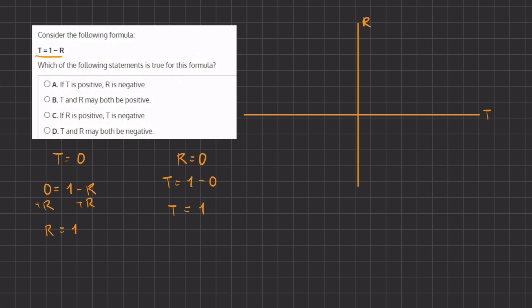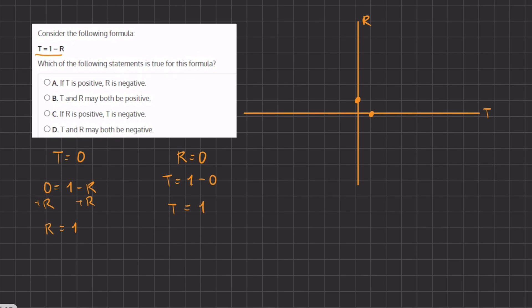Our first point is going to be when t equals 0 and r equals 1, so that is going to be right over here. And our second point is going to be when r equals 0 and t equals 1. That's going to be right over here. We're going to connect our two points in order to see our linear function.